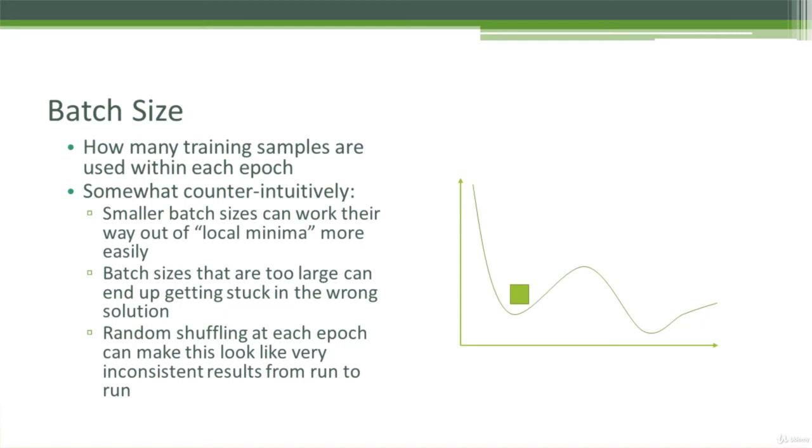It turns out that if you have a small batch size, it has a better ability to work its way out of what we call local minima. So in this example here, you can see that we have a minima here, sort of a dip in the graph here, where we have a pretty good, nice low loss function value here.